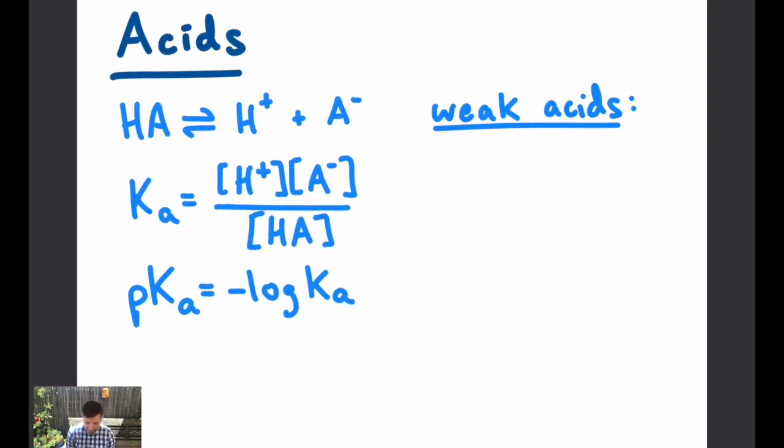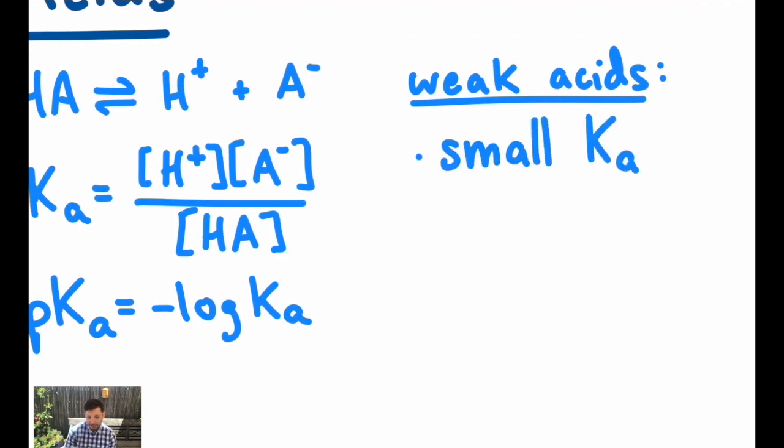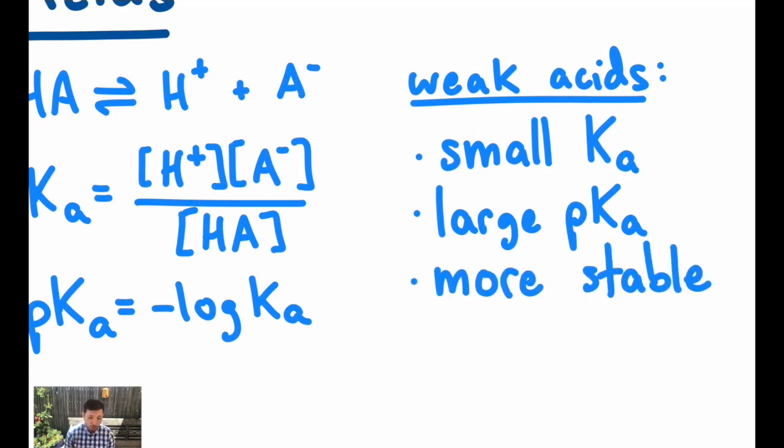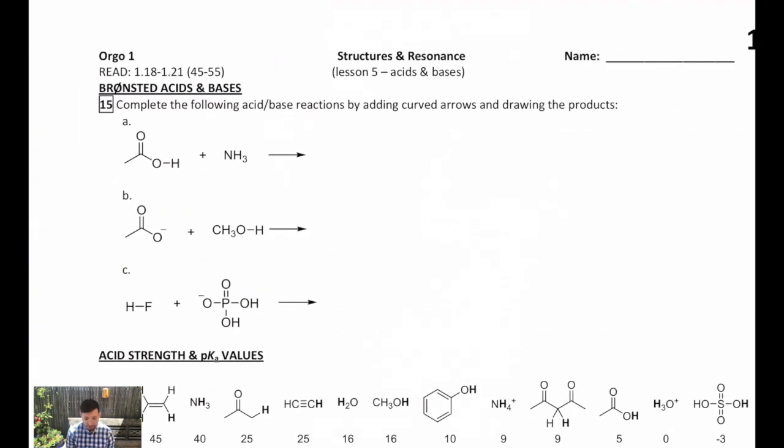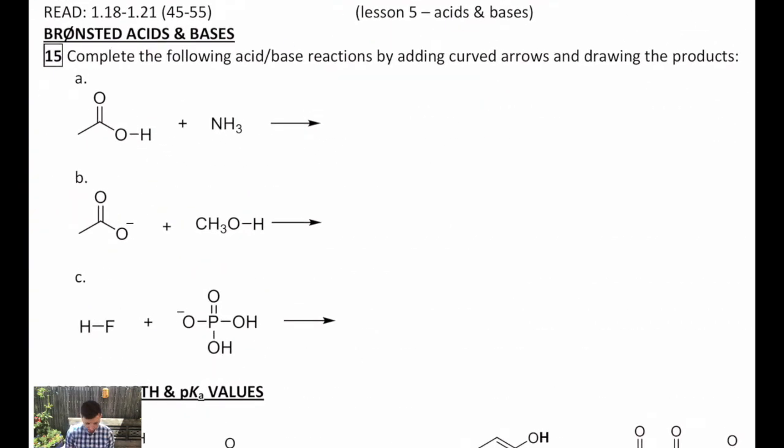So weak acids in summary have small Ka values, that means they turn into large pKa values. What I really want you to take home is that they are more stable. When something is weak in terms of chemistry that means it's not very reactive, so it's very stable conversely. And when we look at chemical reactions they tend toward the more stable thing.